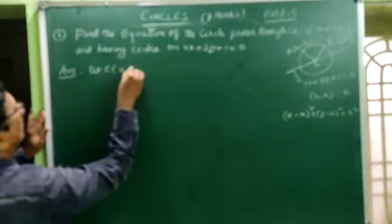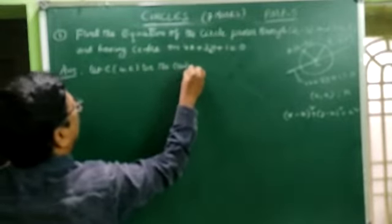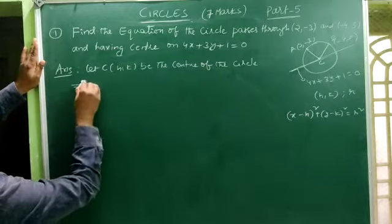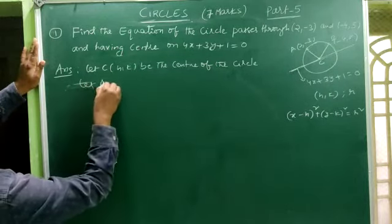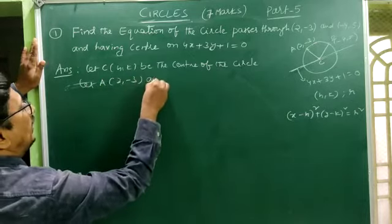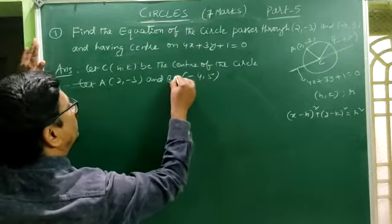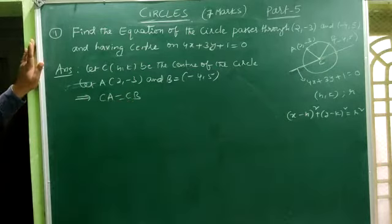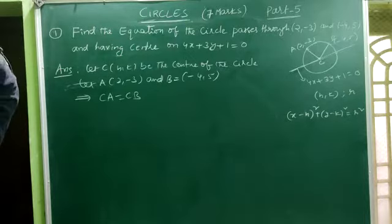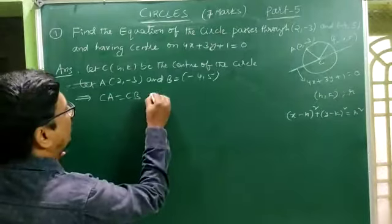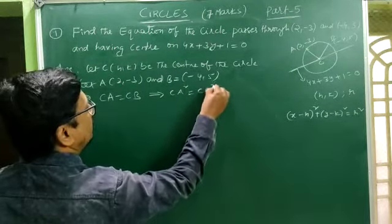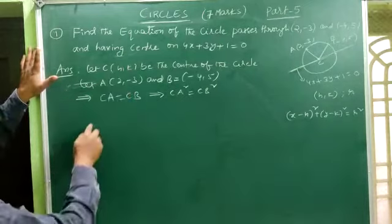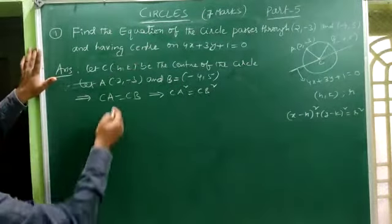Let C(h, k) be the center of the circle. Let A = (2, -3) and B = (-4, 5). Then we can conclude that CA = CB, because the center is equidistant from the two points. Squaring both sides, CA² = CB². CA² is the distance between C(h, k) and A(2, -3), that is (h - 2)² + (k + 3)².